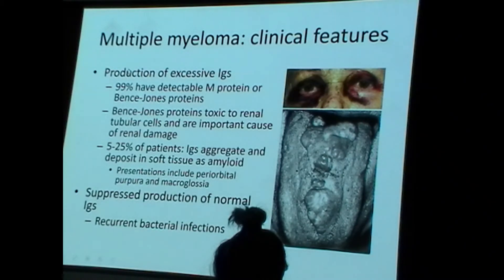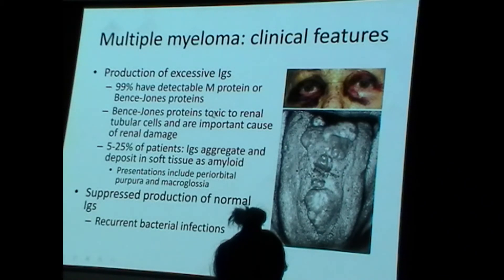Bence-Jones proteins, which are small enough to be excreted in the urine, travel through the glomerular filter and the renal tubular system. Bence-Jones proteins are extremely toxic to renal tubular epithelium and are an important cause of renal damage. Therefore, individuals with plasma cell myeloma have kidney damage.